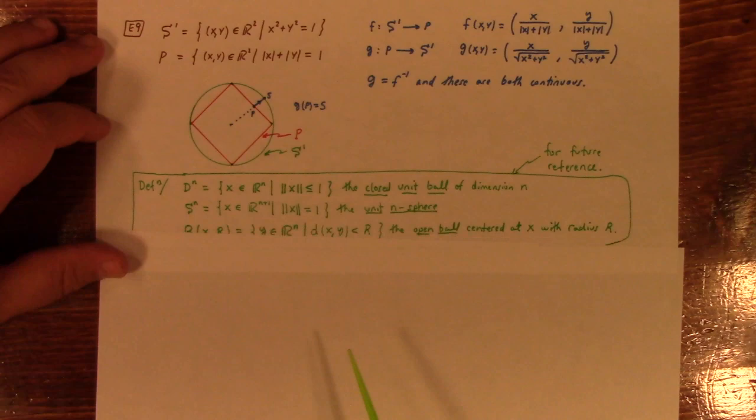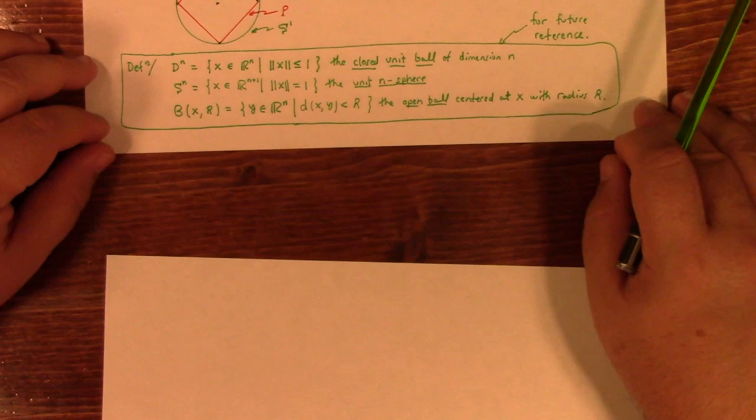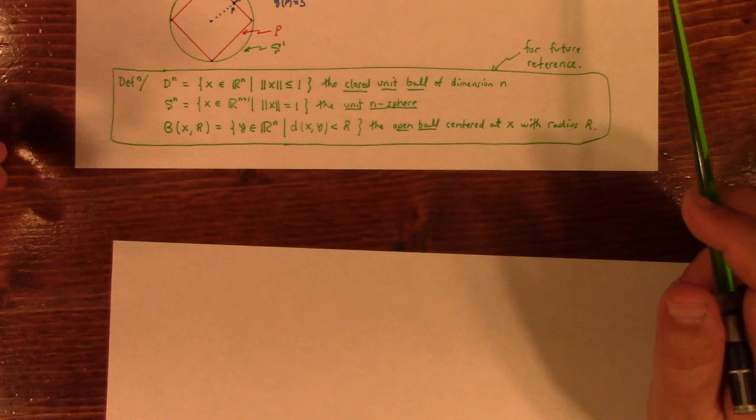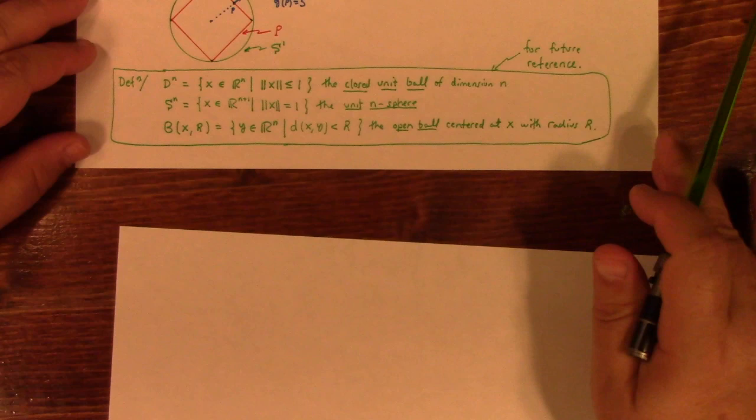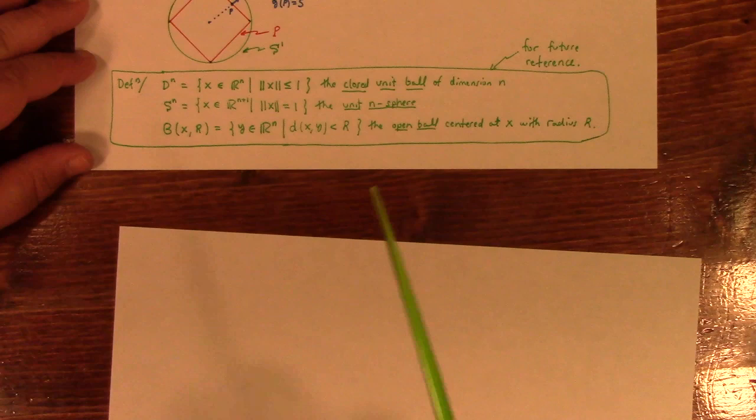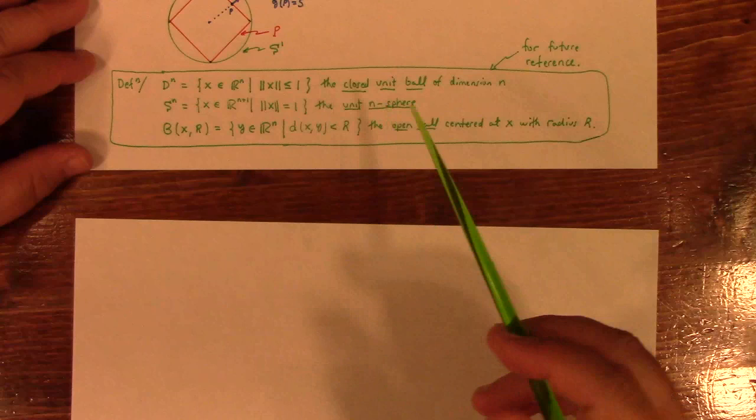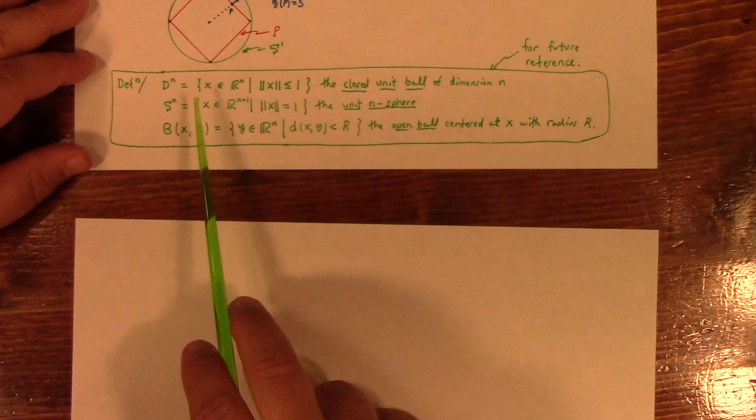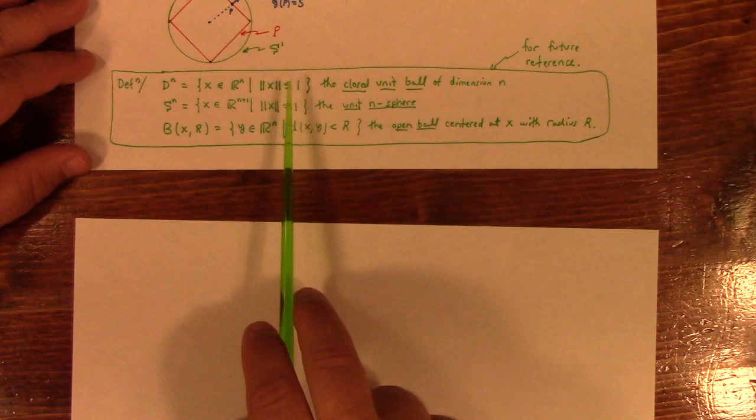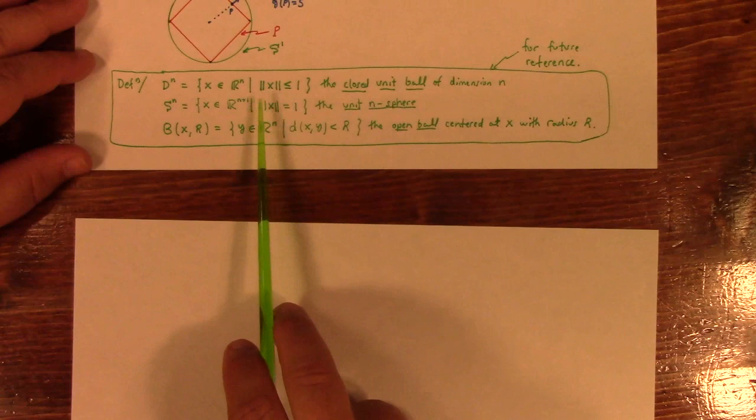And here's some notation for future reference. Yeah, I was debating whether or not to do chapter one because chapter two is really where topology proper starts in this book. But I thought it would be a good use of our time just to get acquainted and also just to make sure we're not missing notational nuances of this book because we want to understand the notation. On the flip side of things, don't get too bogged down on chapter one because it's not rigorous. It's a review. It's a taste of things. It's not really a complete discussion. So, this is the closed unit ball. This is the unit end sphere. And this is the open ball centered at X with radius R.